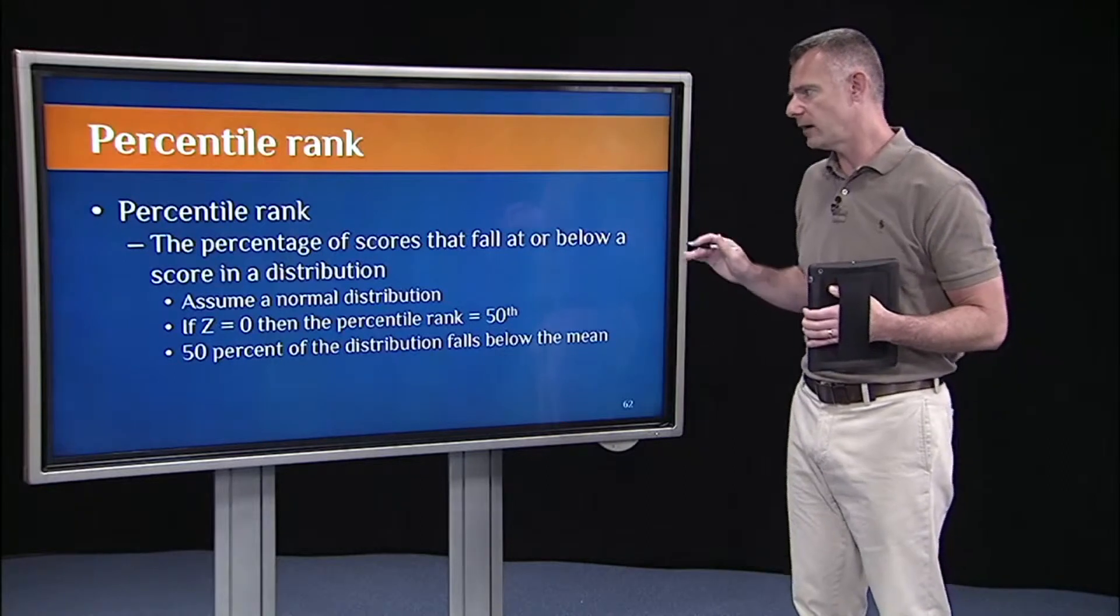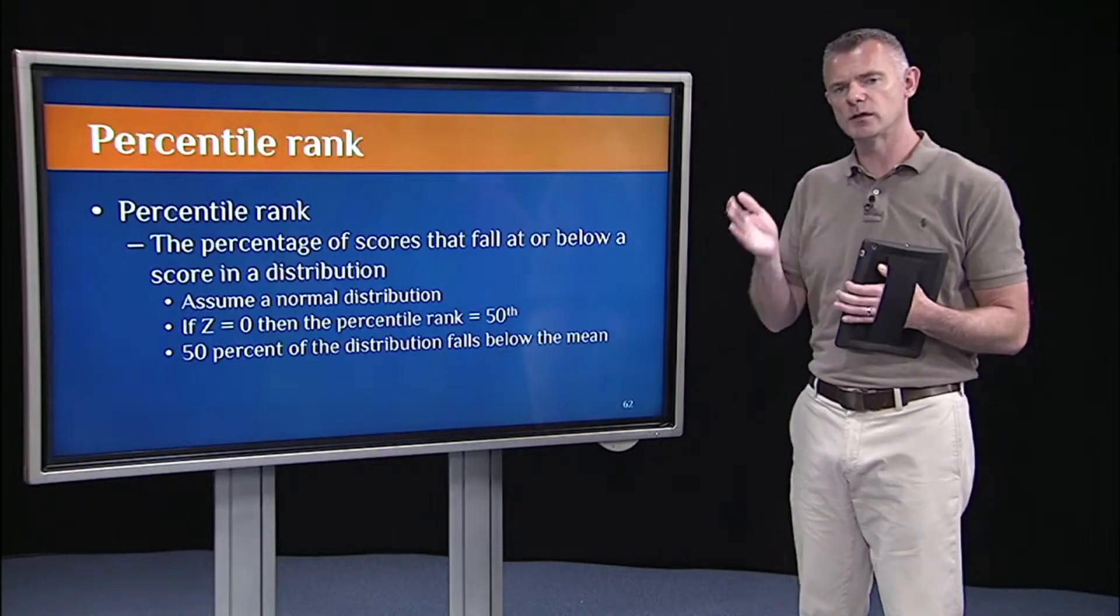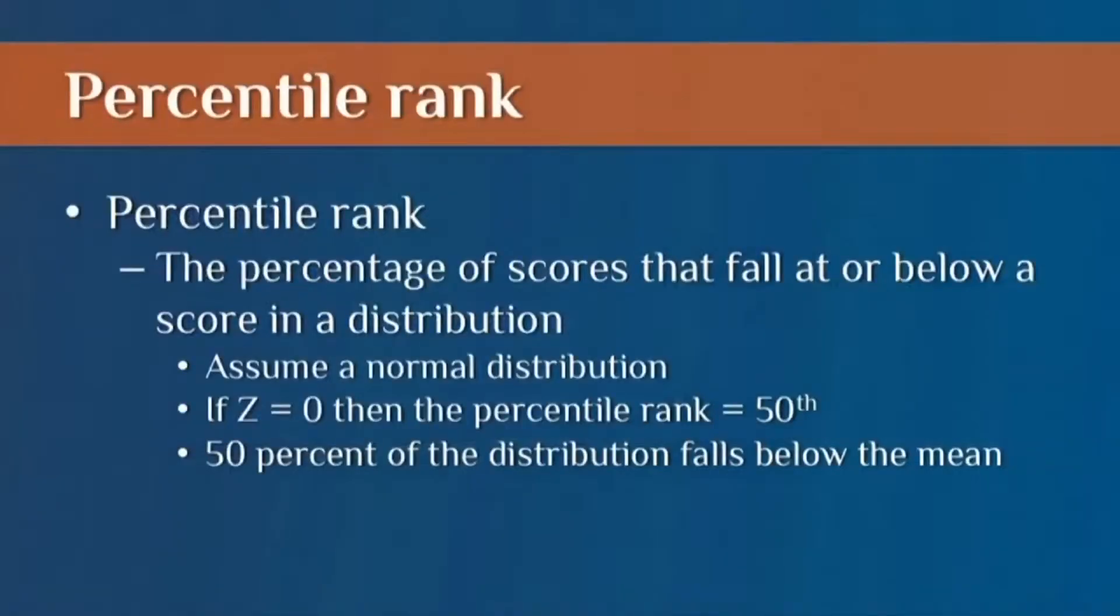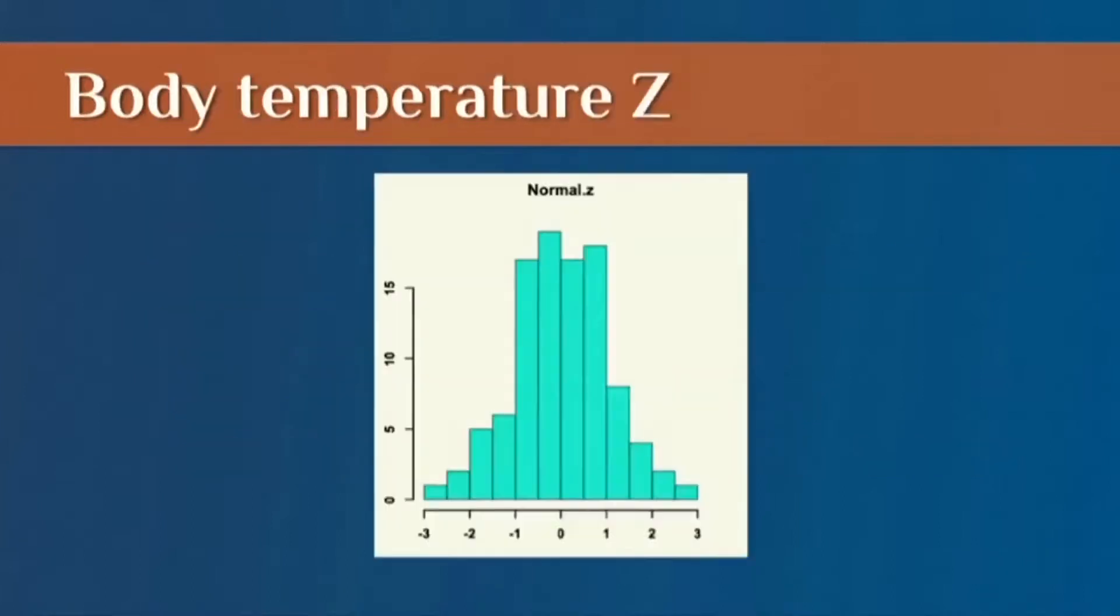The percentile rank is just the percentage of scores that fall at or below that score in a distribution. So if we're dealing with a perfectly normal distribution and we've converted everything to Z scores, then I know that the percentile rank for a Z of 0 is 50%.